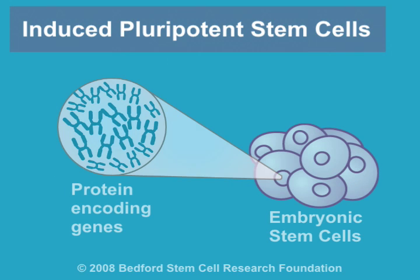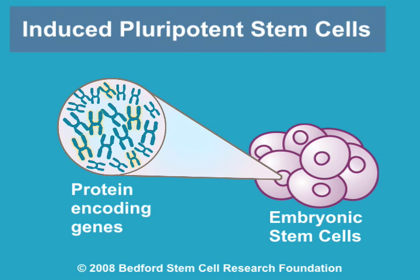Research had revealed that only a few of the more than 20,000 proteins that are encoded by the genes inside human embryonic stem cells were actually responsible for the stem cell characteristics of pluripotency and self-renewal.